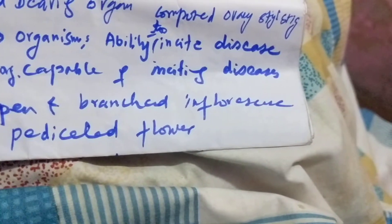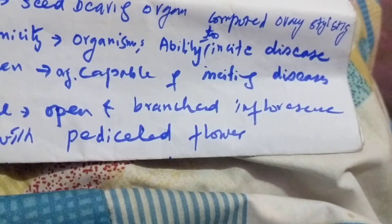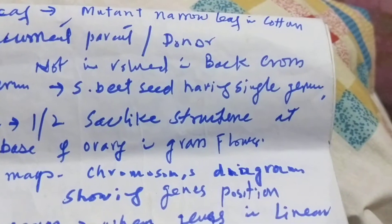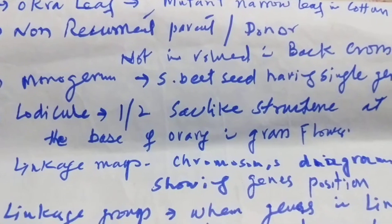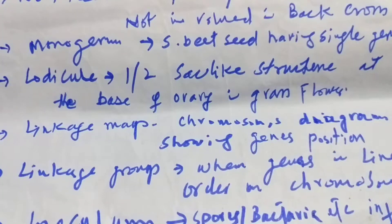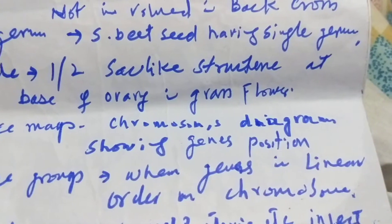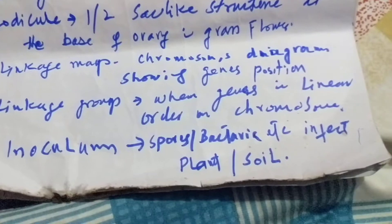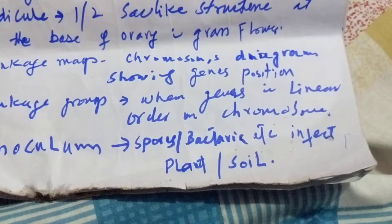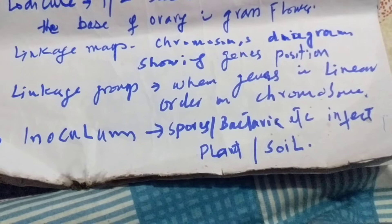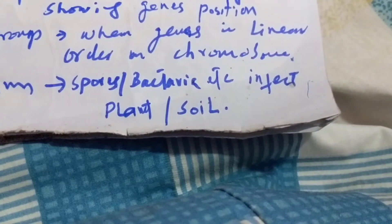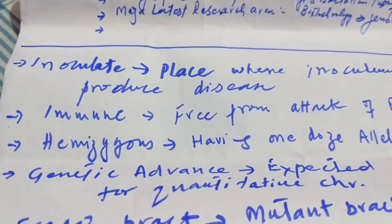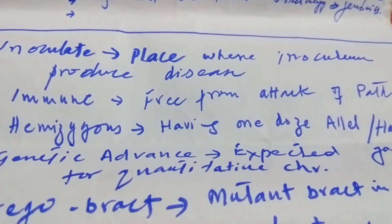Panicle is an open and branched inflorescence with pedicellate flowers. Okra leaf is the mutant narrow leaf in cotton. Non-recurrent parent or donor are the parents not involved in backcross. Monogerm is a sugar beet seed having a single germ. Lodicules are one or two sac-like structures at the base of the ovary in grass flowers. Linkage map is a chromosome diagram showing gene positions. Linkage group is the group when genes are arranged in linear order on a chromosome. Inoculum refers to spores or bacteria that infect a plant or soil.